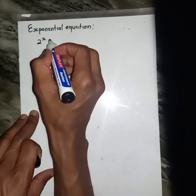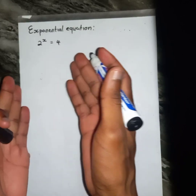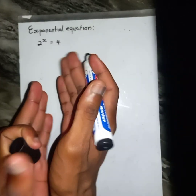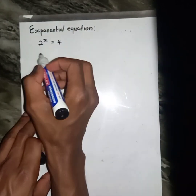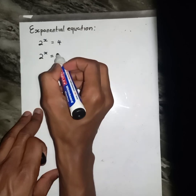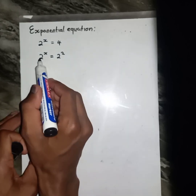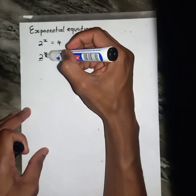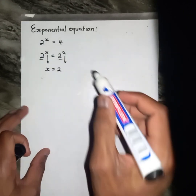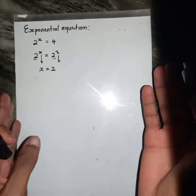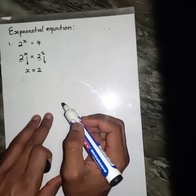Suppose I give you something like this: 2 to the power x equals 4, and I ask you to solve for x. How are you going to solve for x? Firstly, we need to find the prime base. The prime base of 4 is going to be 2 squared. Immediately at this point we have the same base, which is 2 on both sides, so we can then drop the exponents.